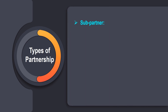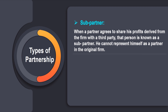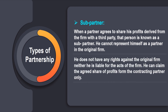Then we have sub-partners. When a partner agrees to share his profits derived from the firm with a third party, that person is known as a sub-partner. He cannot represent himself as a partner in the original firm, does not have any rights against the original firm, and is not liable for the acts of the firm. He can claim only the agreed share of profits from the contracting partner.